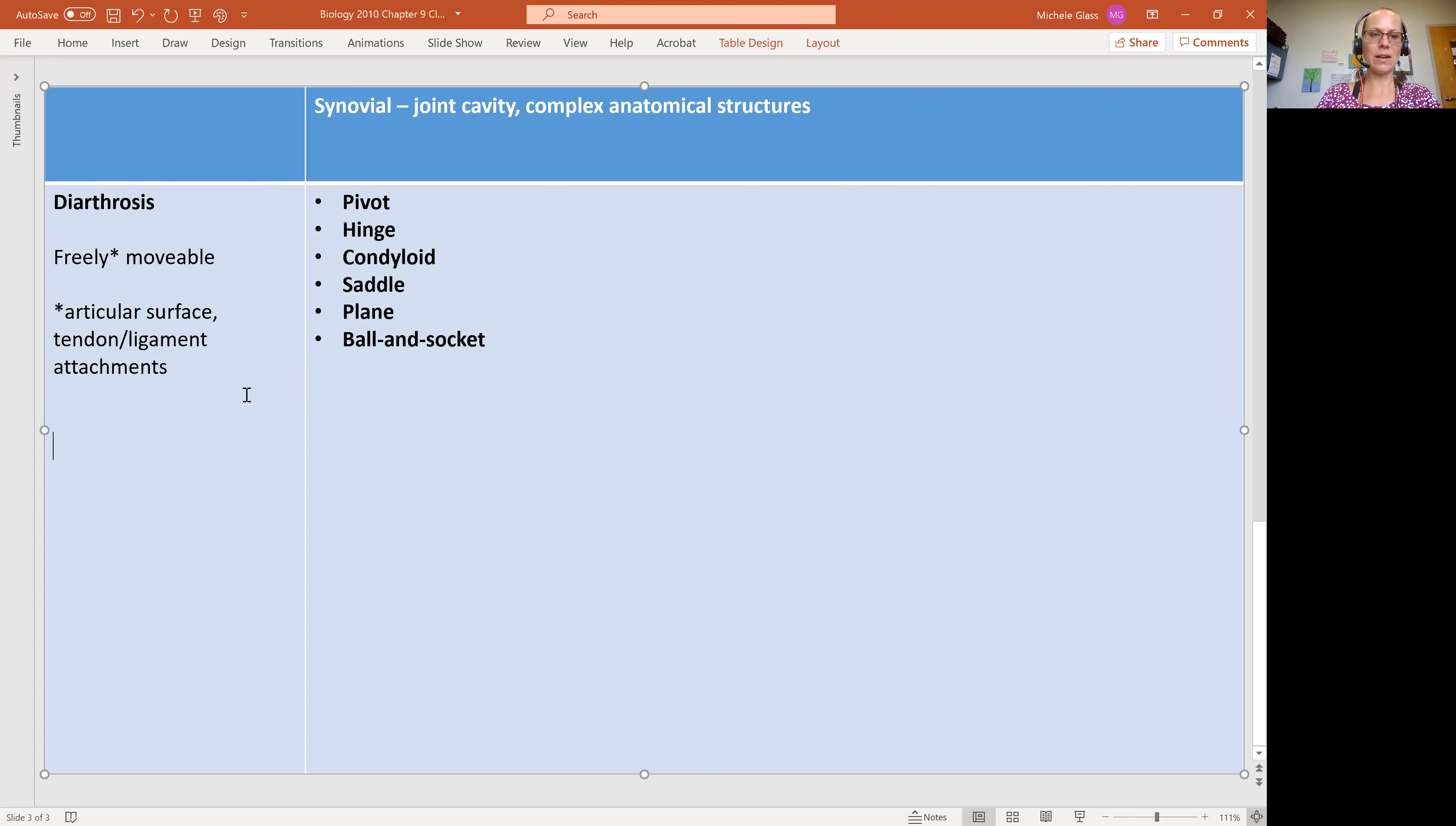So underneath our heading of diarthrosis, let's remind ourselves that you can have a uniaxial joint, meaning that you get movement in one plane. We can have a biaxial joint, meaning that we get movement in two planes. And we can also have a multiaxial joint, meaning that we get movement in all three planes.